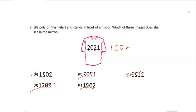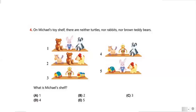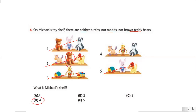Question 4: On Michael's toy shelf there are neither turtles, nor rabbits, nor brown teddy bears. So which shelf is Michael's? Eliminating options: one shelf has a turtle so it's eliminated, another has a turtle so it's eliminated, another has a rabbit so it's eliminated, and another has a brown teddy bear so it's eliminated. The remaining shelf is number four, so the answer is option D.